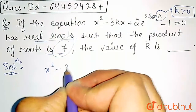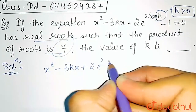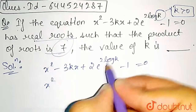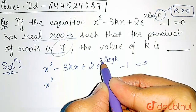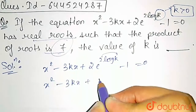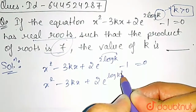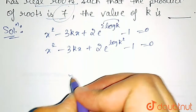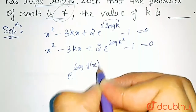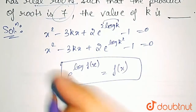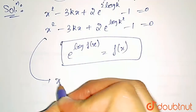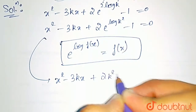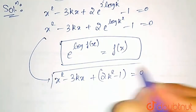Now let us write the equation again. We know our property: 2 log k can be written with the 2 taken into the power of k — this is a property of log. So we get e raised to the power log k squared, minus 1, equals 0. We also know the property that e raised to the power log f(x) equals f(x), so e raised to the power log k squared can be written simply as k squared. This is the quadratic equation we are left with.